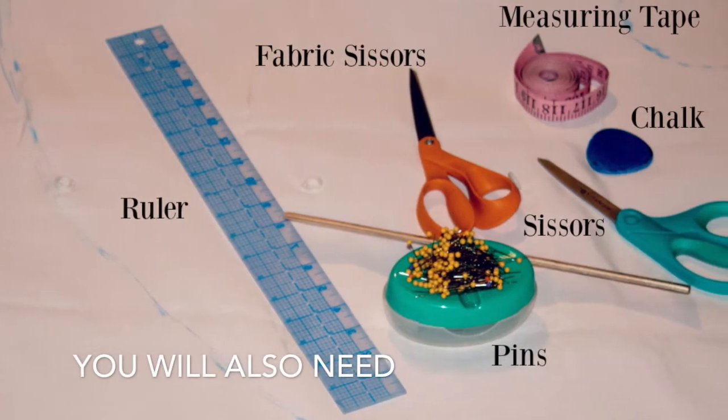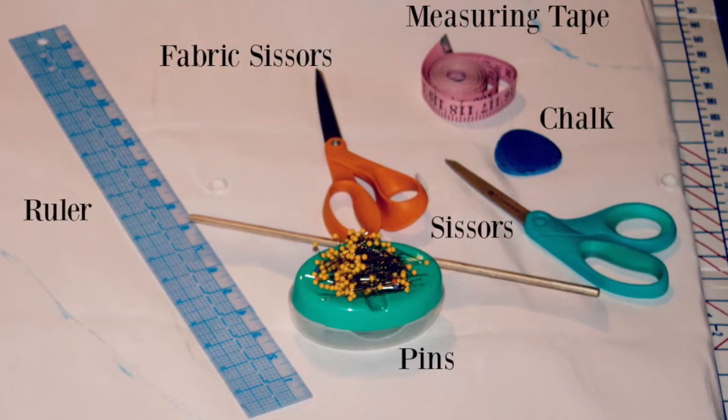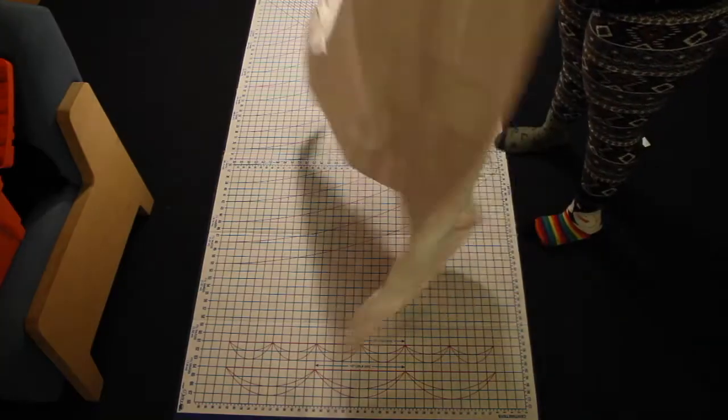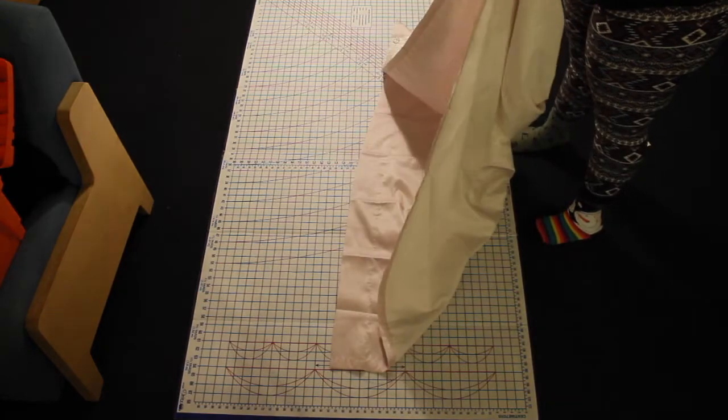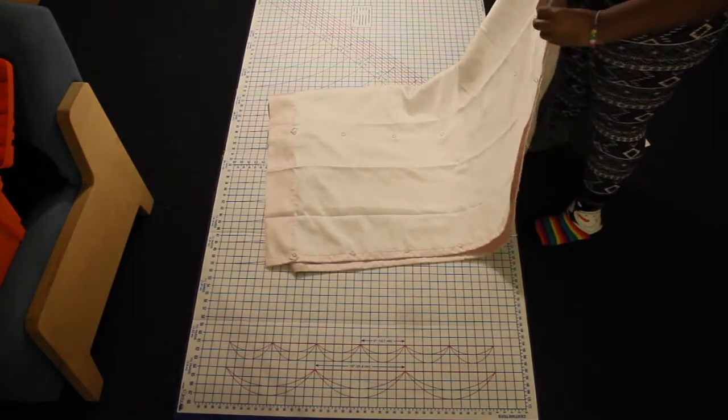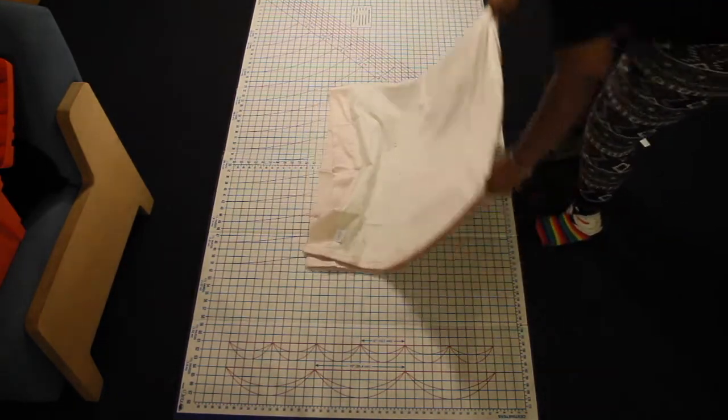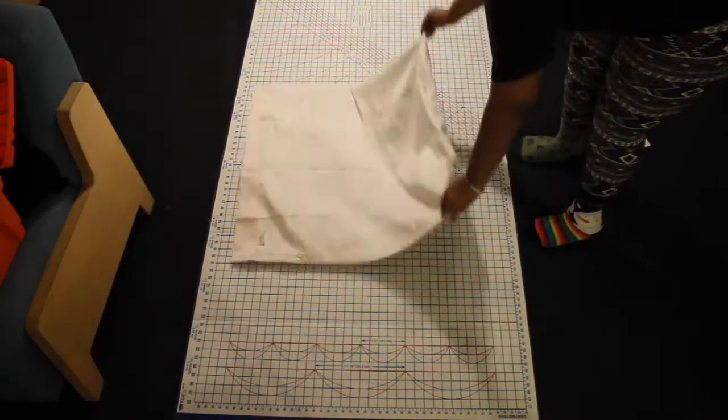Okay, so the materials we need are a ruler, fabric scissors, pins, regular scissors, measuring tape, and some chalk. You're going to want to begin by folding your fabric in half, and then folding it over again to create a nice square. We're making the circle skirt.